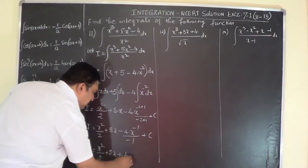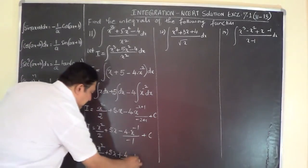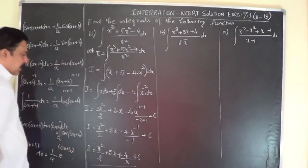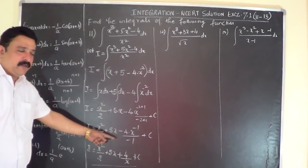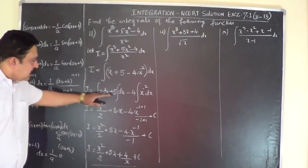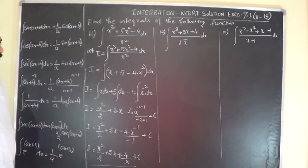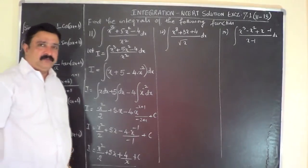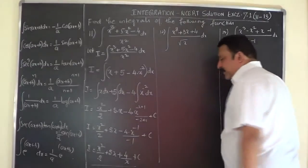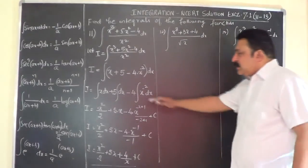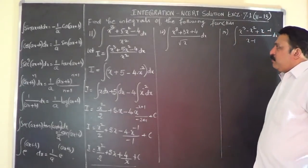4 times x to the power of minus 1 is 4 times (1/x), so we take it to the denominator. The final answer is I = x²/2 + 5x + 4/x + C. Even if you leave it at an earlier stage, you will be given full marks, because you are doing a problem on integration and simplification to the last step is not always required. Just integrate the given function properly using the respective formula.